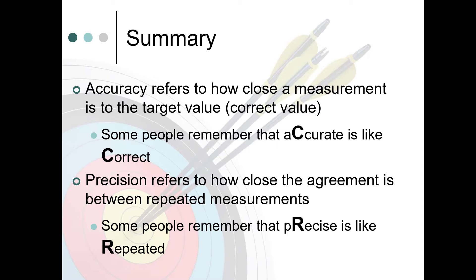Just to recap, accuracy refers to how close a measurement is to the target value, the correct value. Some people remember that accurate is like correct. Precision refers to how close the agreement is between repeated measurements. Some people remember that precise is like repeated.